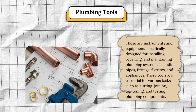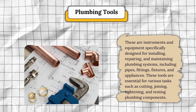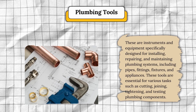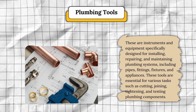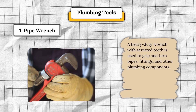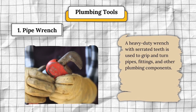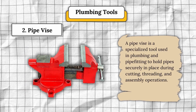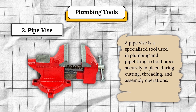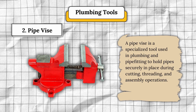The next classification is plumbing tools. These are instruments and equipment specifically designed for installing, repairing, and maintaining plumbing systems, including pipes, fittings, fixtures, and appliances. Number one, pipe wrench — a heavy-duty wrench with serrated teeth used to grip and turn pipes, fittings, and other plumbing components. Number two, pipe vise — a specialized tool used in plumbing and pipe fitting to hold pipes securely in place during cutting, threading, and assembly operations. Number three, pipe cutters — handheld tools used for cutting pipes cleanly and accurately, coming in various types including standard, tubing, and ratcheting cutters.